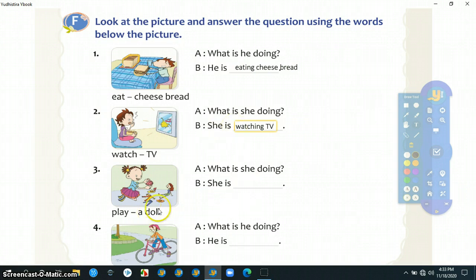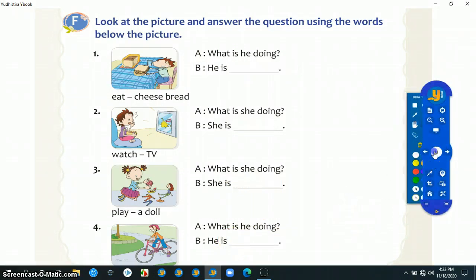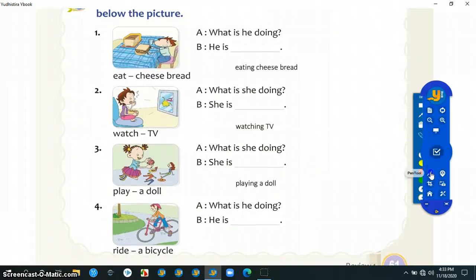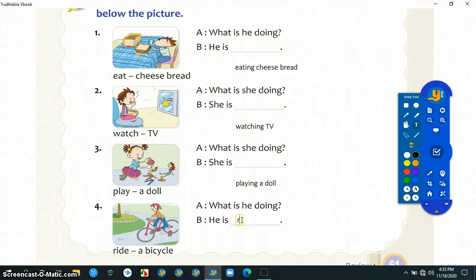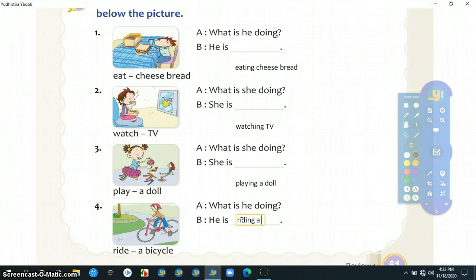Kemudian number three: what is she doing? She is, dari play berarti playing a doll. Kemudian number four: what is he doing? He is, kita lihat disini, dari kata ride berarti menjadi riding. Nah riding disini diingat ya, tulisannya riding bukan reading, ya, riding a bicycle seperti ini. Ingat-ingat ini jawabannya.